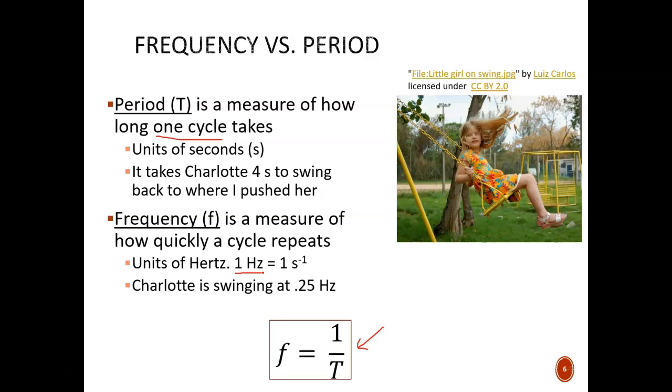Back to the swing example, a period of four seconds provides a frequency of one over four hertz, or 0.25 hertz. This means that over the course of one second, one quarter of the swing is complete.